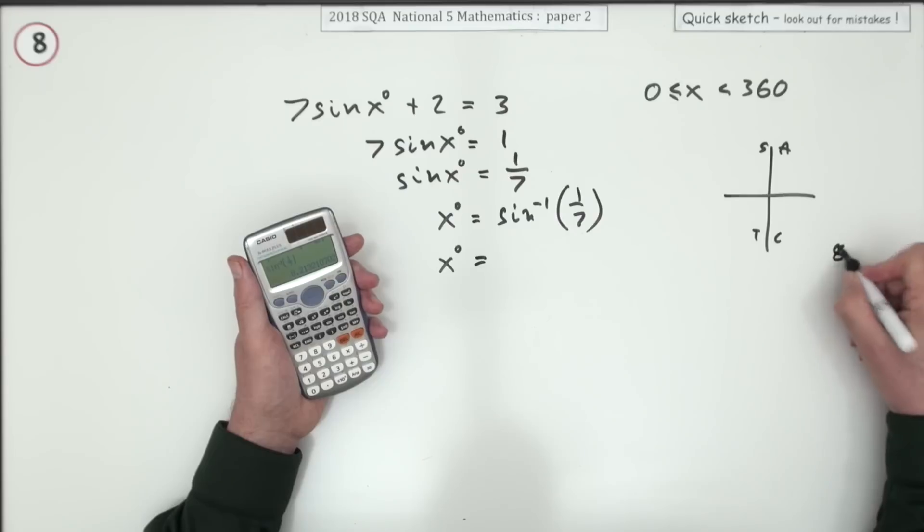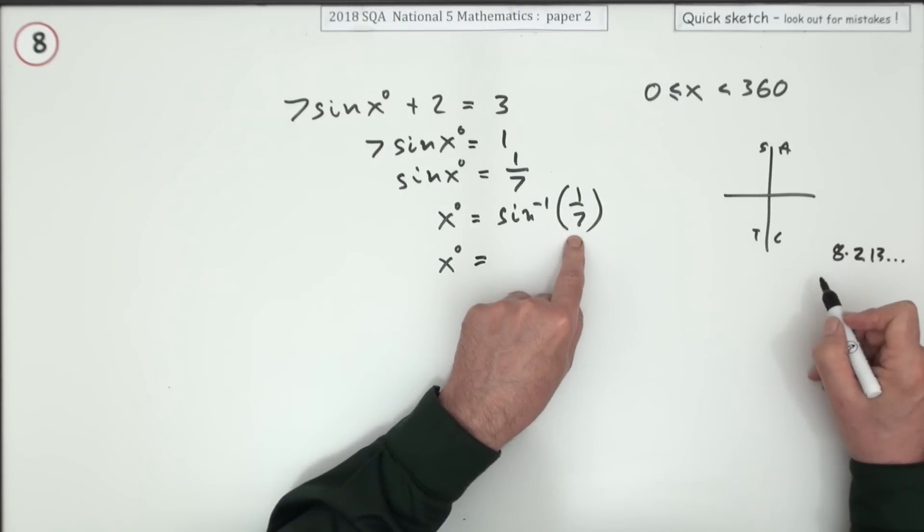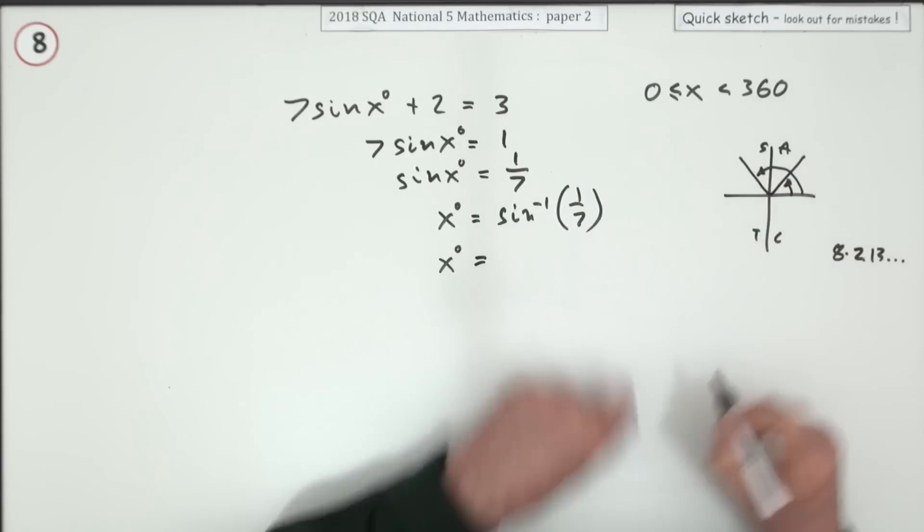Then where does that go? Well that's positive. So either in the first quadrant or in the second quadrant. So it's either this angle here or this angle here.